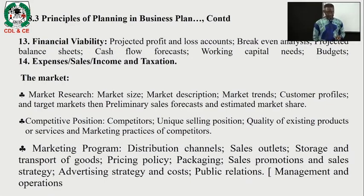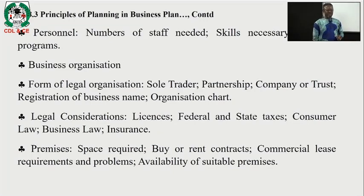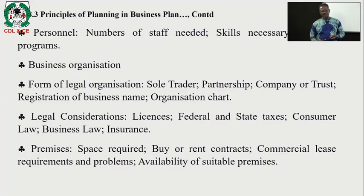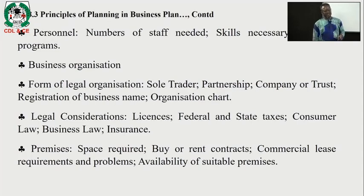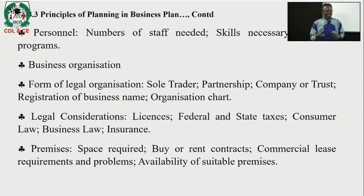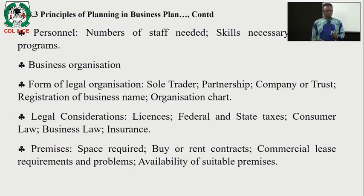Management and operations. Personnel: number of staff needed, skills needed, training programs, and business organization. Forms of legal organization include sole trader, partnership, company with trust, registration of business name, and organization chart. Legal considerations include licenses, federal and state taxes, consumer laws, business laws, and insurance to cover the business in case of any accident. Premises: the space required for the business, whether to buy or rent or contract, commercial lease requirements, and availability of suitable premises.